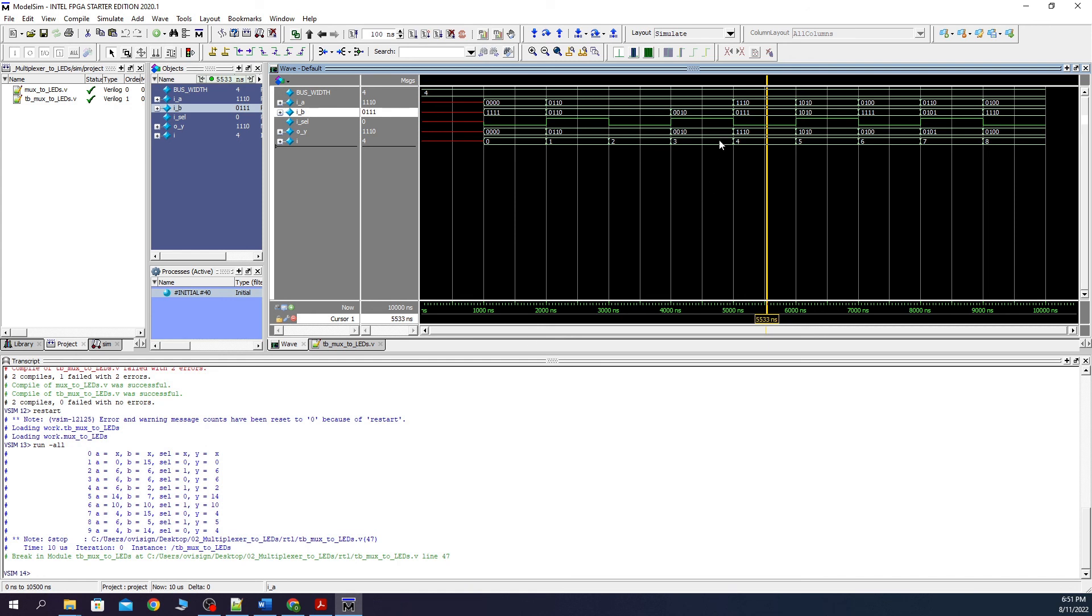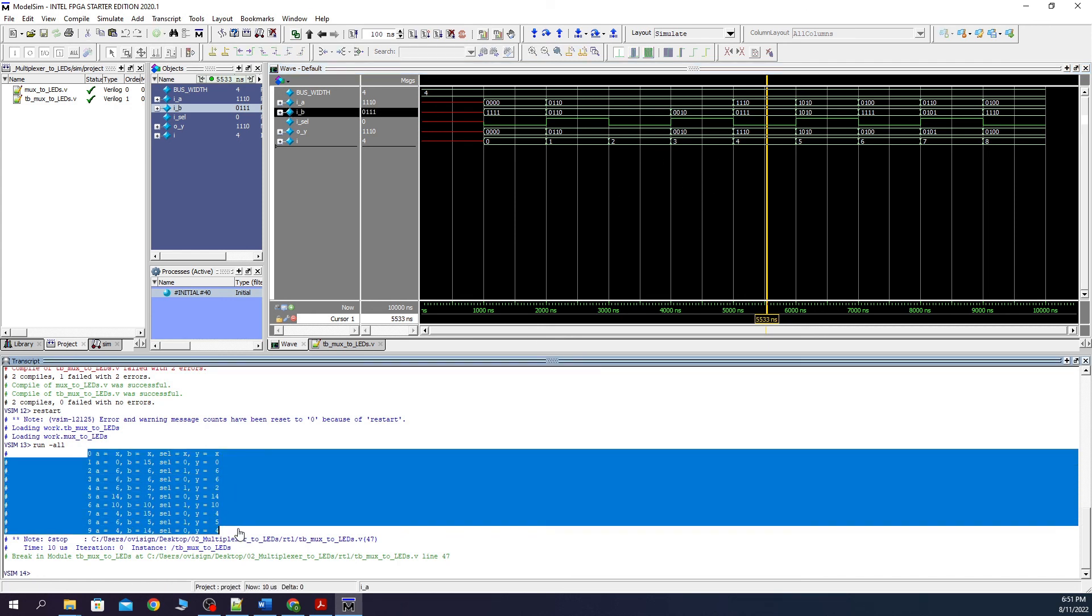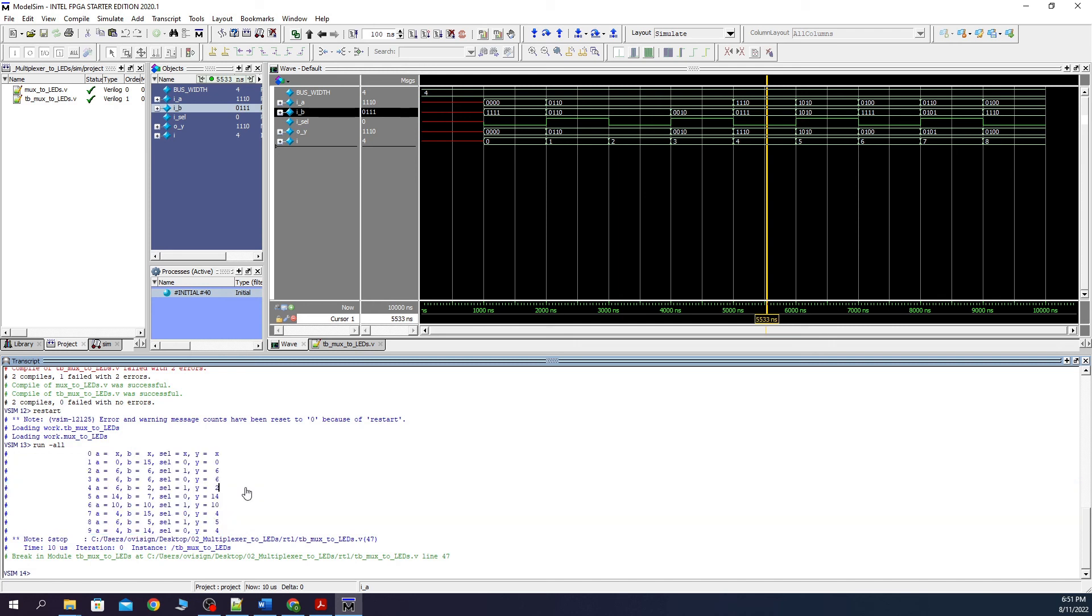The same results that are in the wave can also be observed here in the console. This is it. Let's now start part 2 where we implement our circuit in the FPGA.